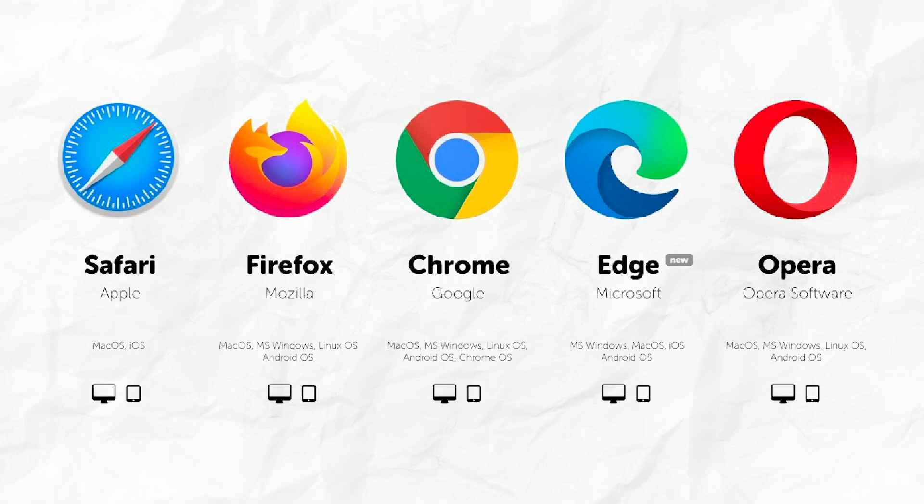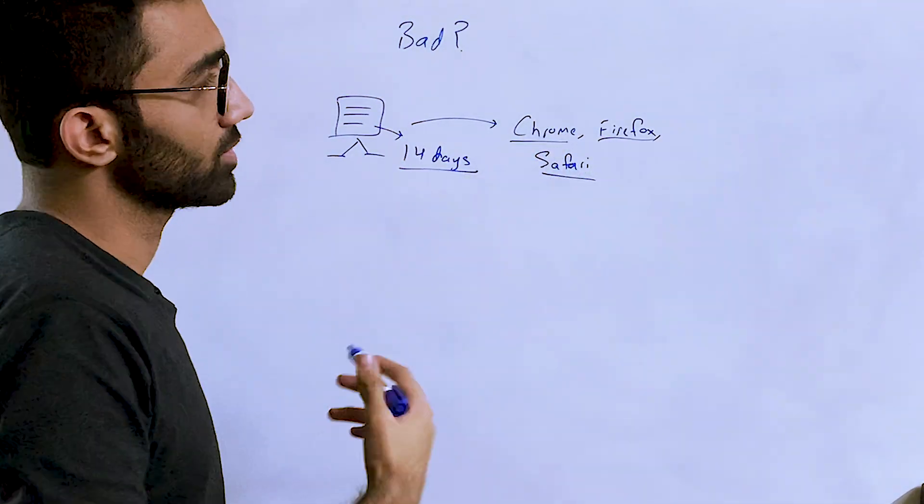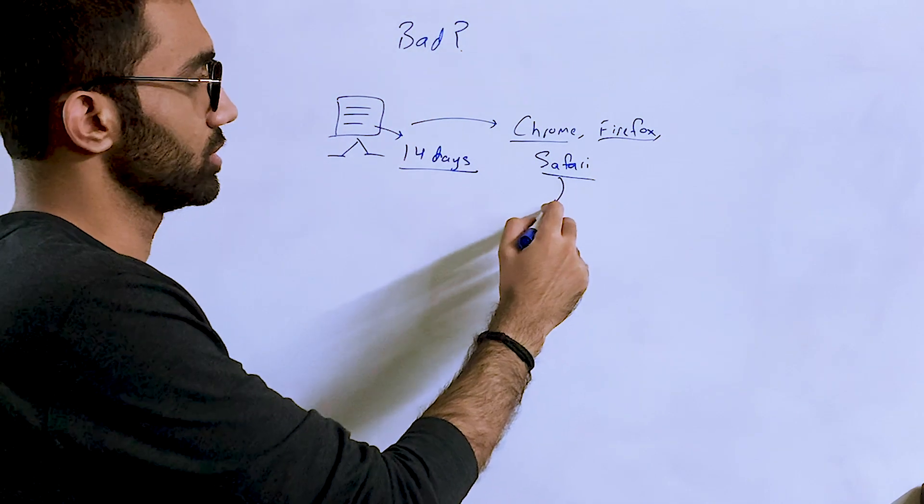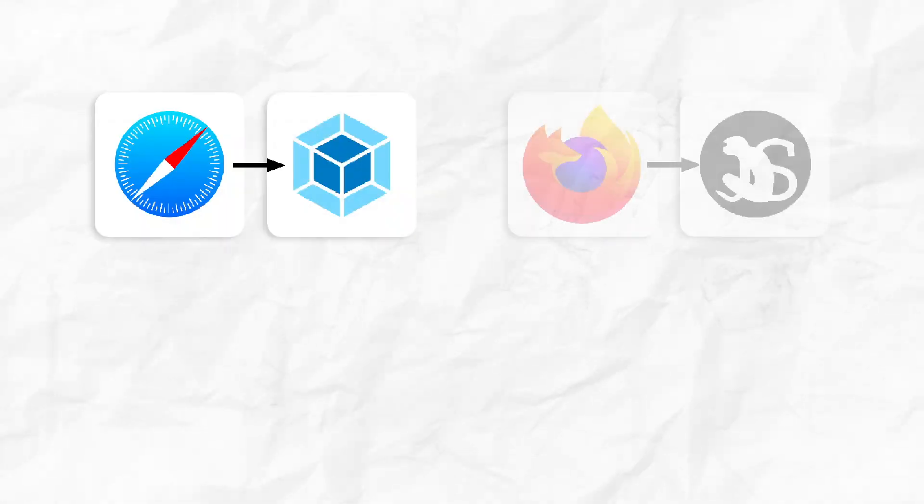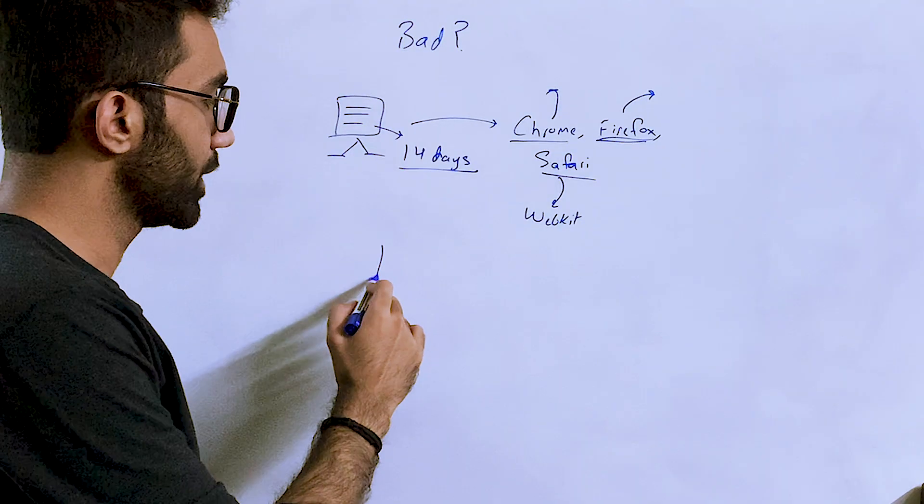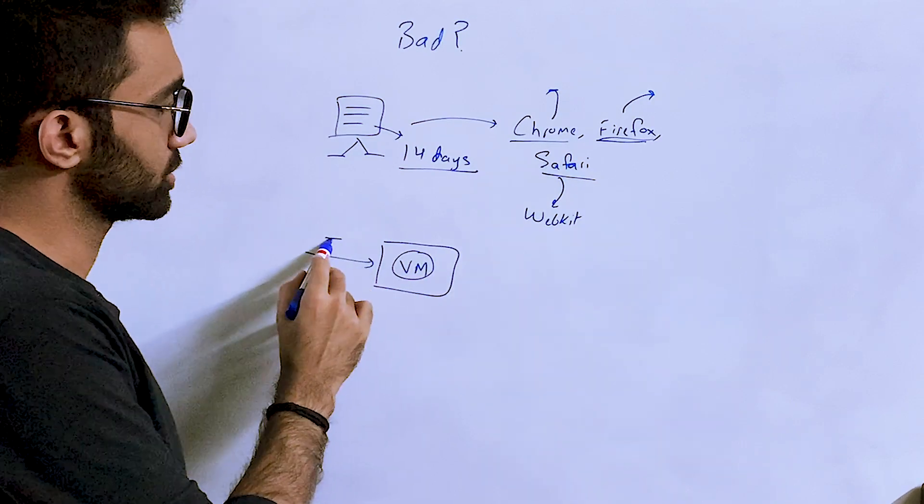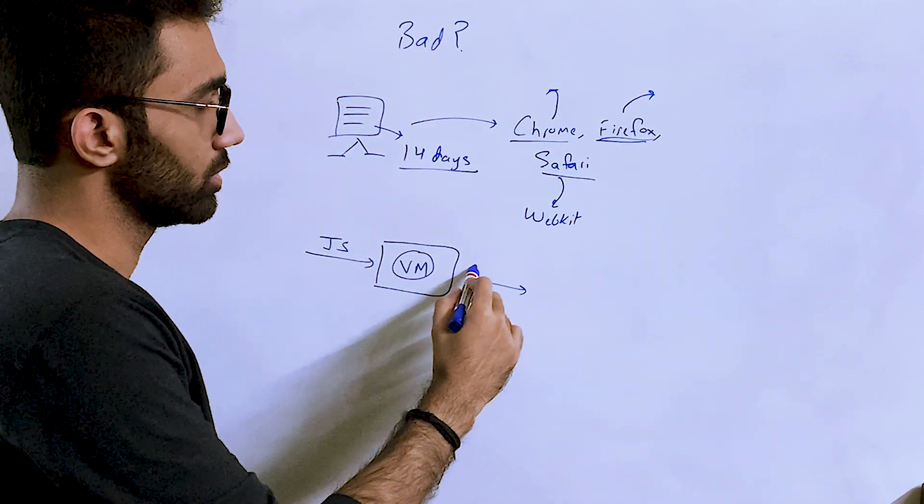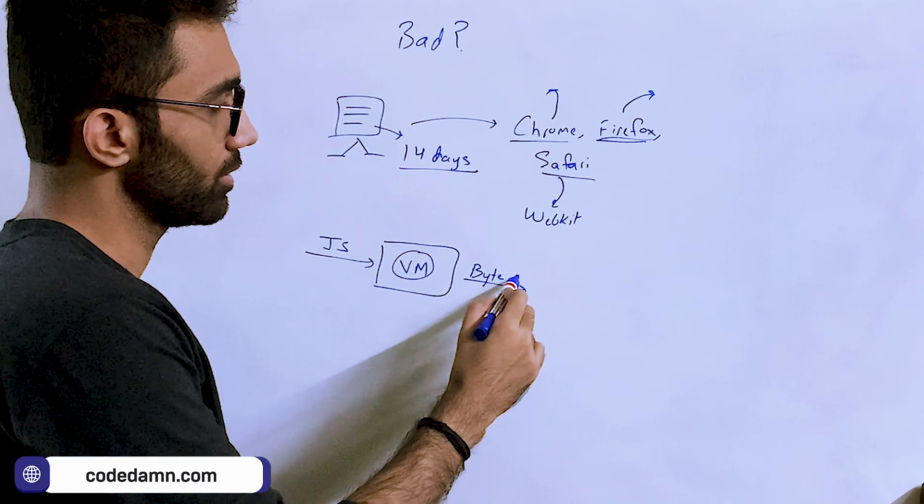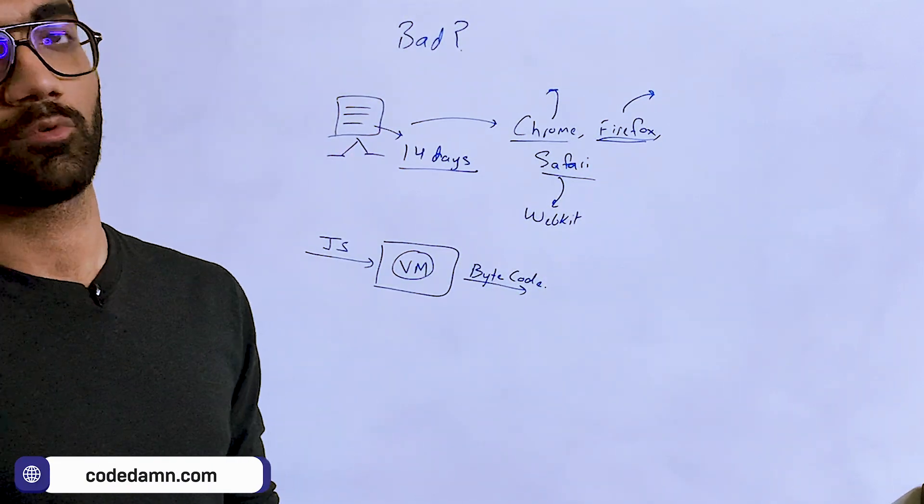The way JavaScript works is each of these browsers ships an engine, a JS engine. Safari ships WebKit, Firefox has its own engine Spider Monkey, Chrome has Chromium. Each of these engines ships a little bit more like a virtual machine in itself which reads your JS code and converts it into bytecode which is executed by your computer.